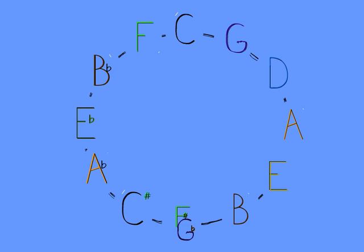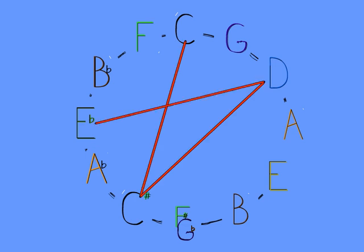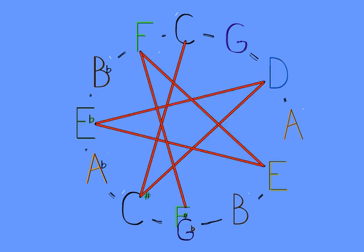In the next videos, we'll look at what each of those divisions shows us. First, dividing by 1 gives us the complete set of 12 notes. This is the chromatic scale.